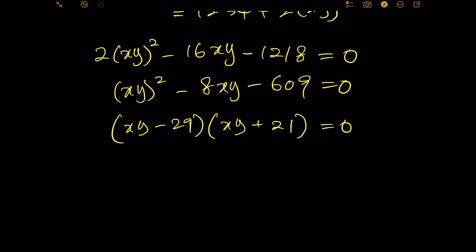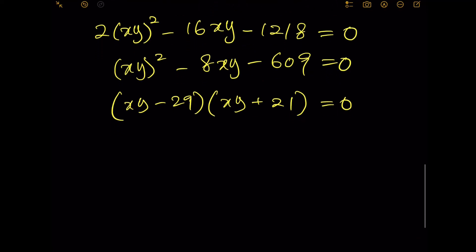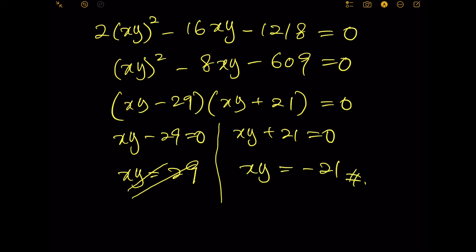This is negative, this is positive, so in other words we have two possible answers. xy minus 29 equals 0, xy equals 29. Now I can tell you this is not a final answer, I will tell you why in a little while. On the other hand, xy plus 21 equals 0, xy equals negative 21.